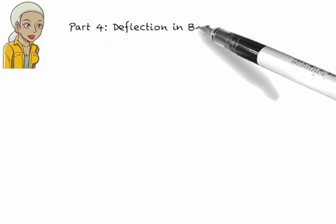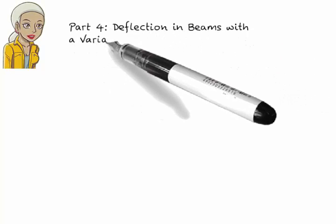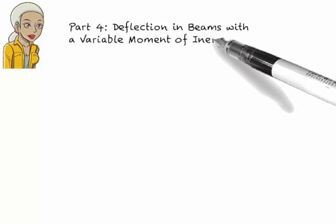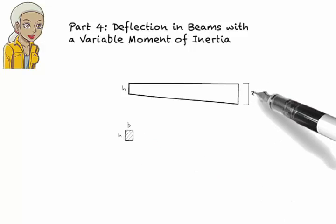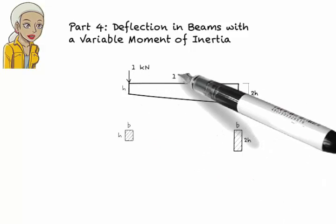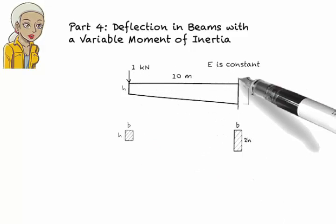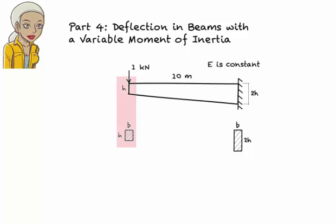Part 4. This example illustrates how to use the double integration method to find a deflection equation for a tapered beam. Consider a cantilever beam with a rectangular cross-section that changes size. The height of the rectangle changes linearly from h at the free end to 2h at the fixed end. We want to write the deflection equation for the beam.